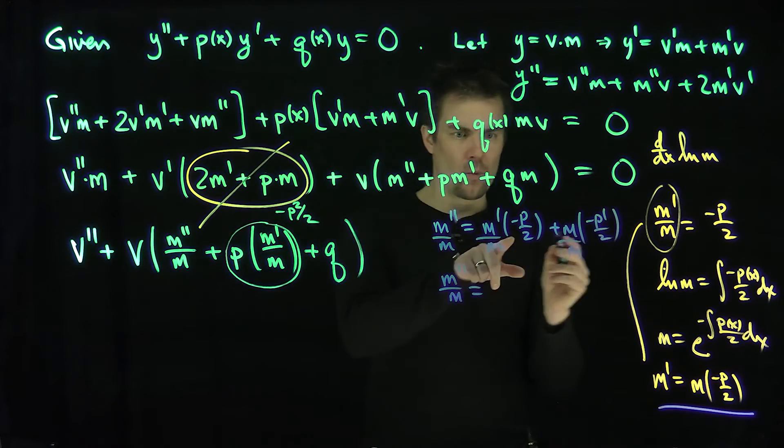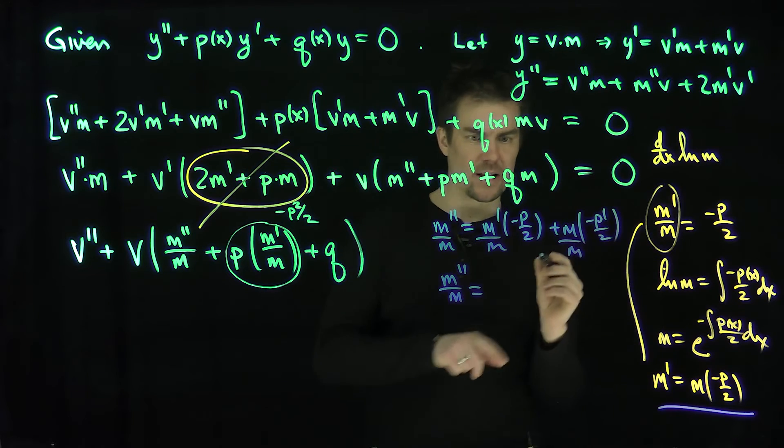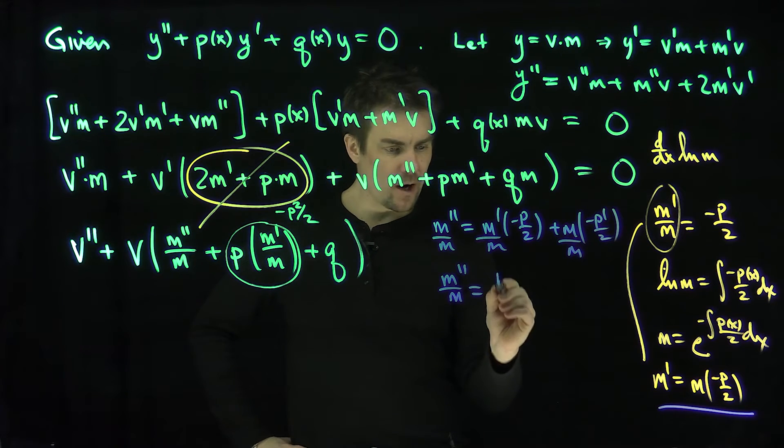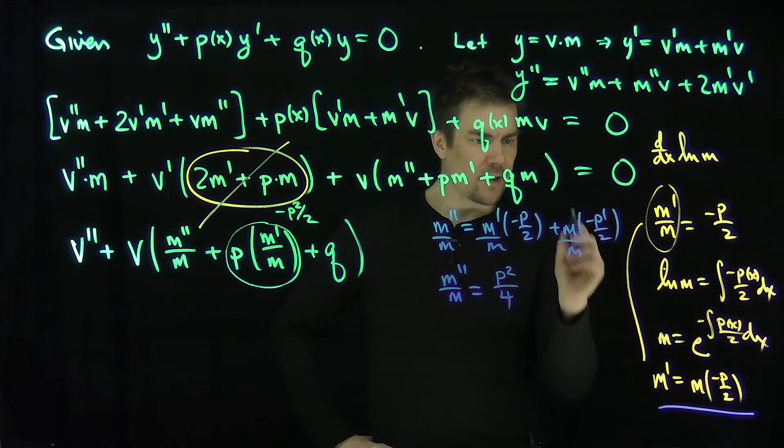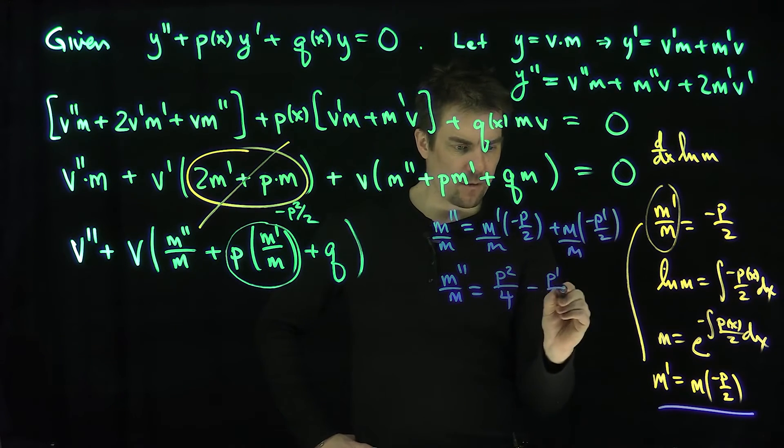well, this is going to be negative p over 2 times negative p over 2. That's right. And then over here, the m is going to cancel. I'm just going to get negative p prime over 2. Okay?